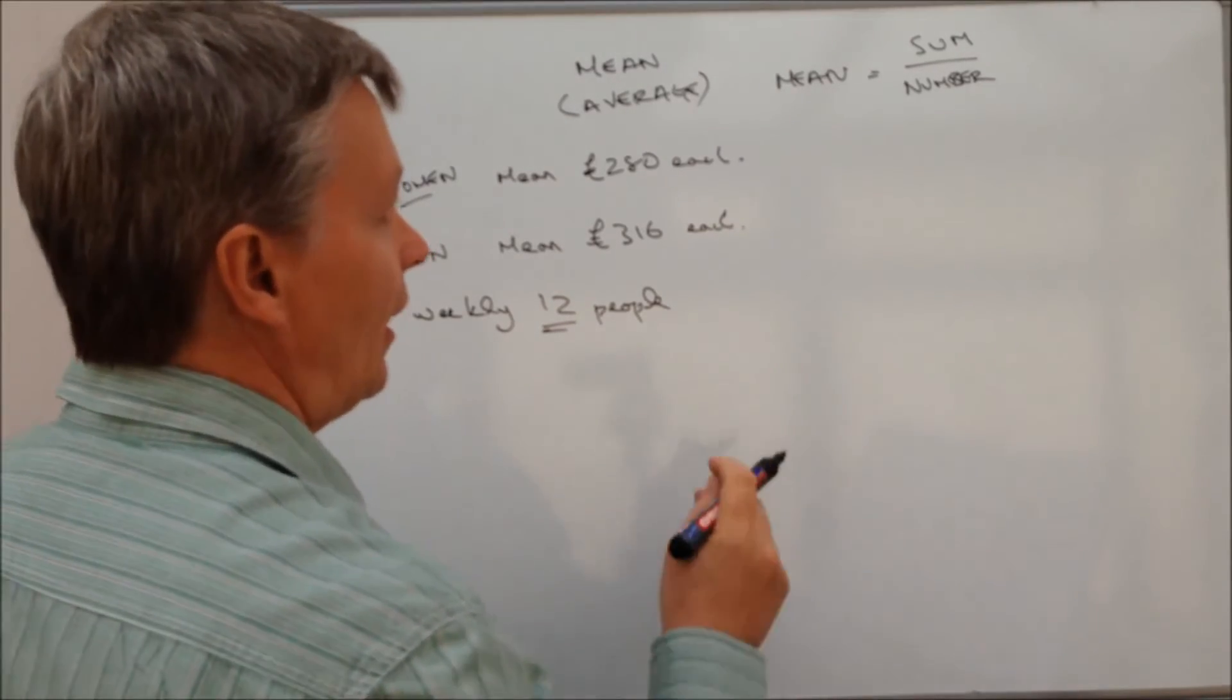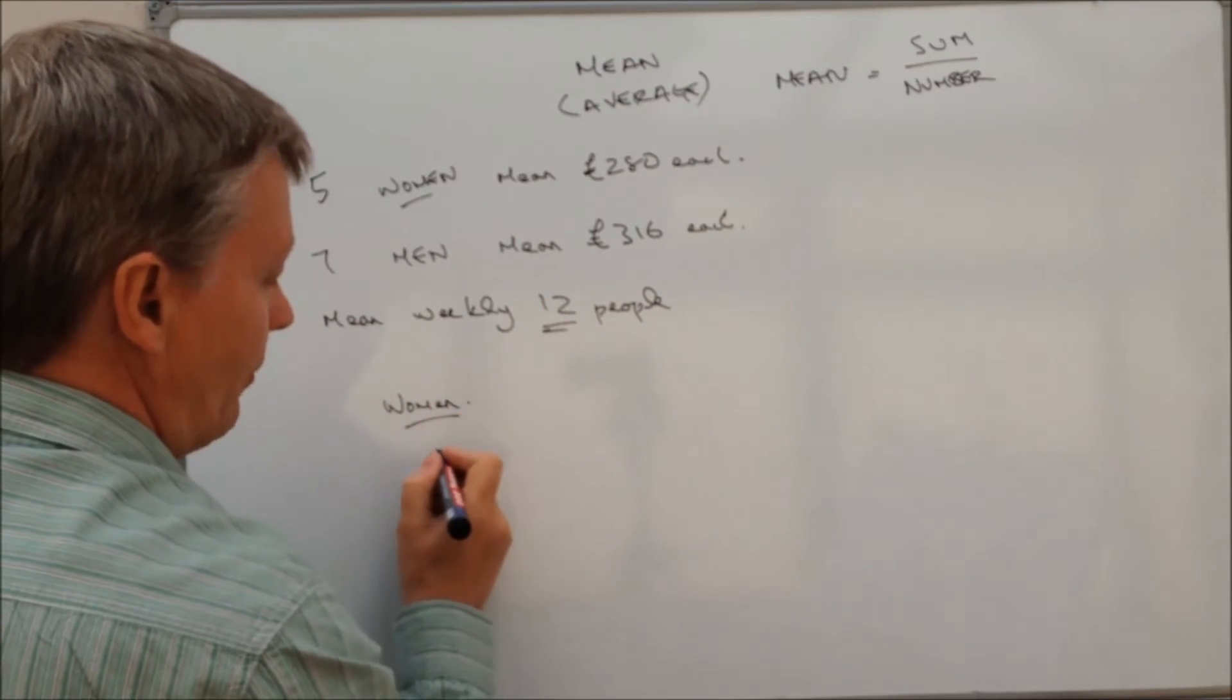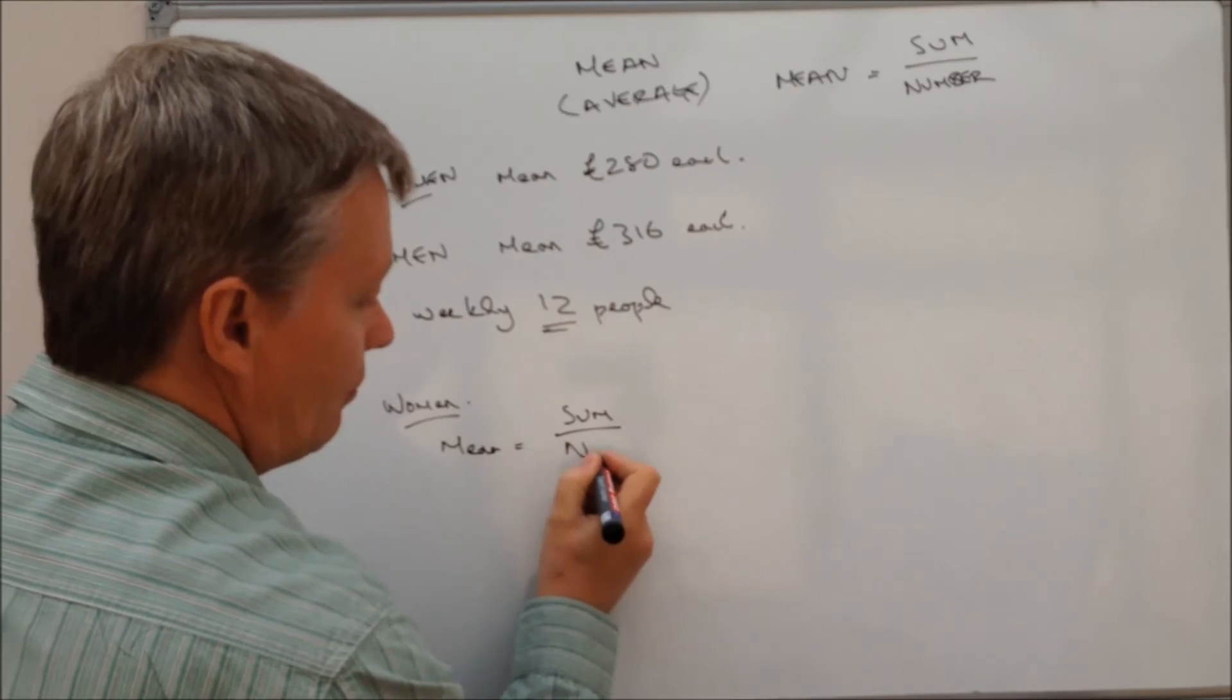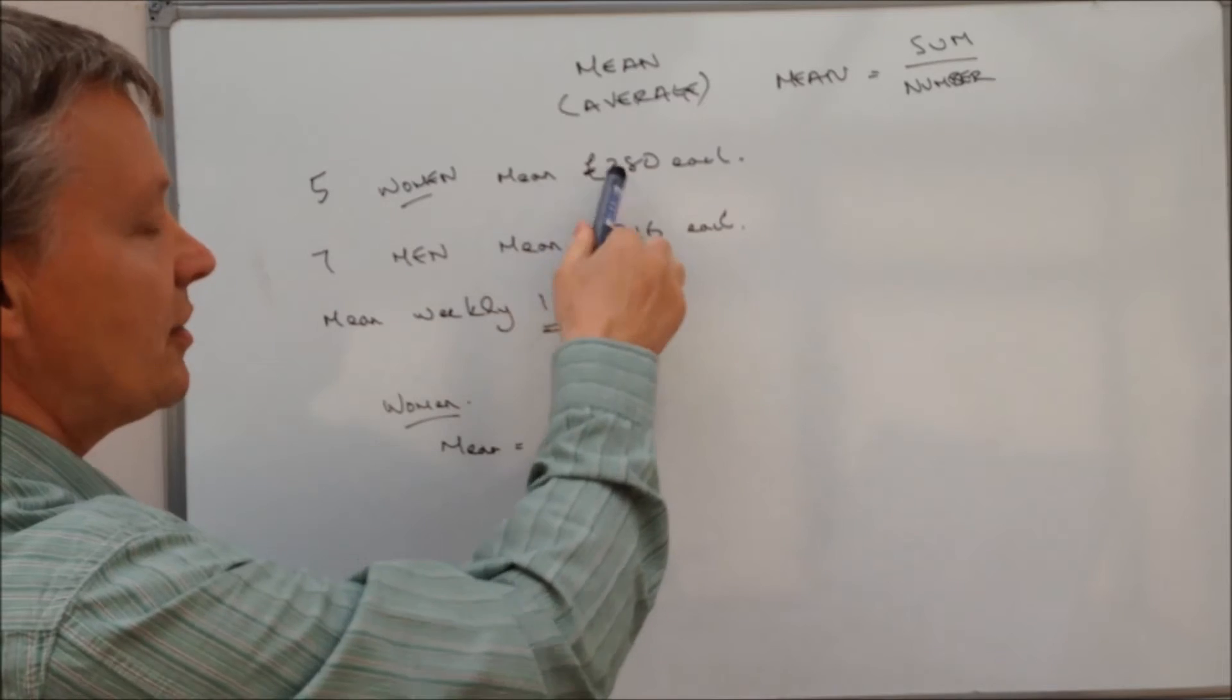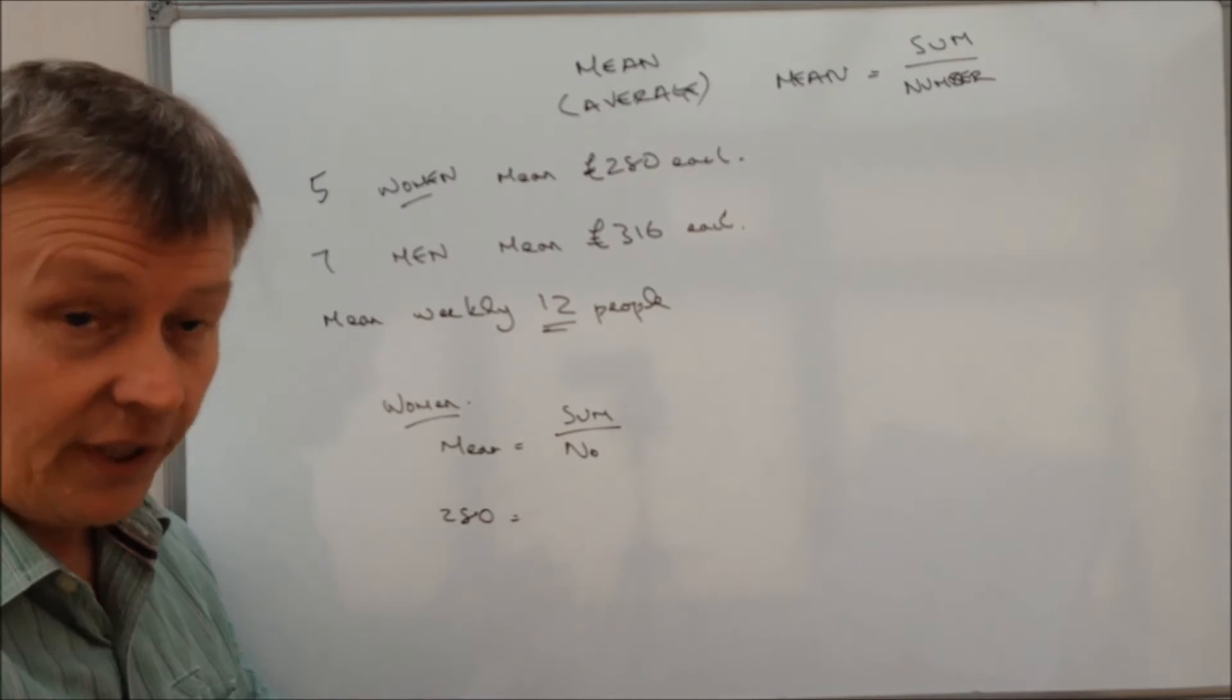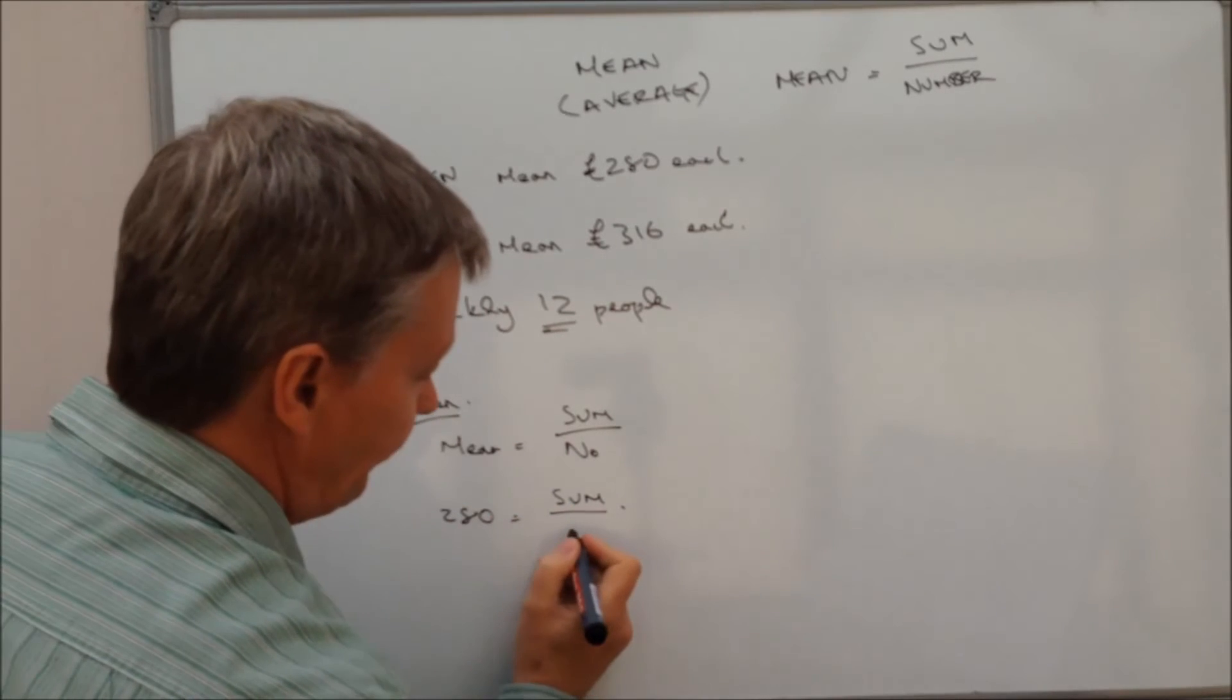If we've got mean equals sum over number and we look at the women, what information have we got? Well, we're told that the mean is 280 pounds. So we can put that in. The sum we don't know because that's effectively the bill for everybody. But we do know that the number of women is going to be five.